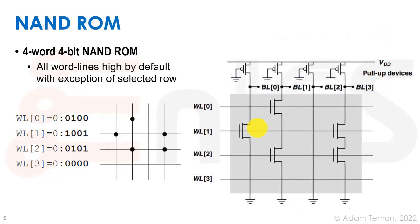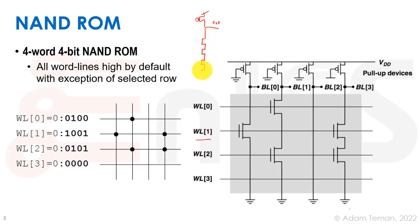Let's analyze this four-word, four-bit NAND ROM with words 00, 01, 10, 11. We again have a pull-up device, but this time NMOS pull-down devices are connected in series. The pull-up provides a weak VDD, and the series NMOS devices pull down the output to zero only when all of them are on.